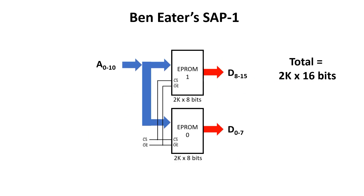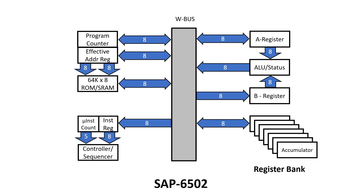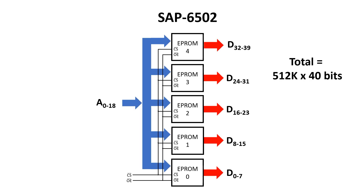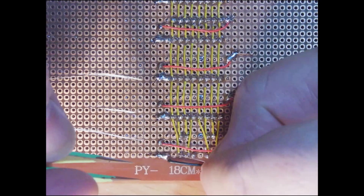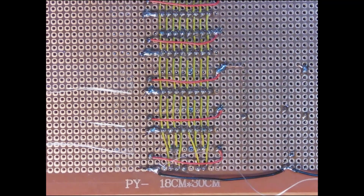The nature of the SAP1 architecture dictates that we have 16 control lines, but the 6502 is a bigger machine with more registers so we're going to need a lot more control lines. The current design has 40 control lines, so we're going to need to gang together five EPROMs. Each chip has 512 kilobytes but we only actually require about 16 kilobytes per chip, so a lot of the address pins are going to be tied to ground. Let's go ahead and build this puppy first and then I'll explain all the signals after.